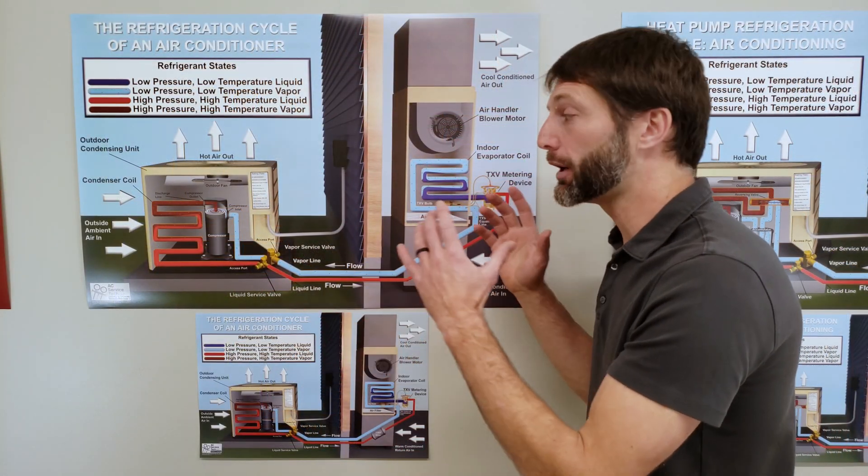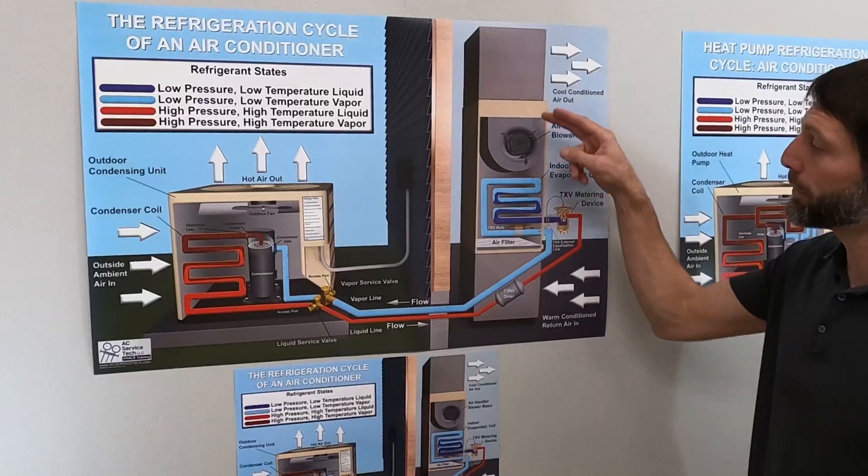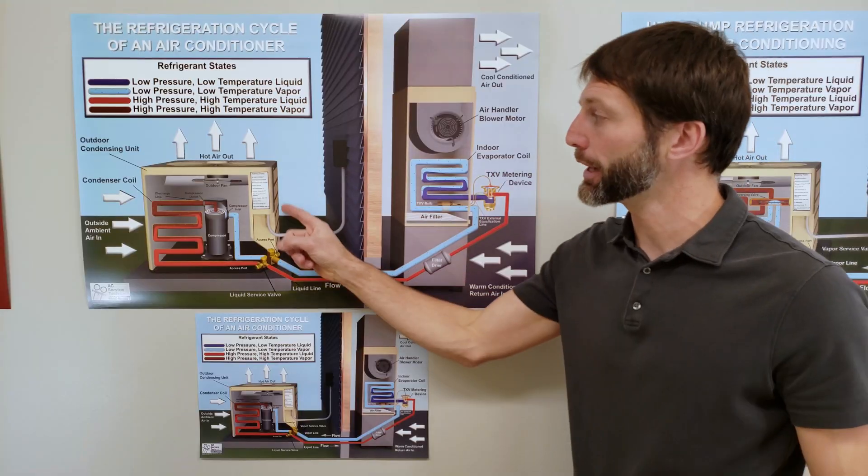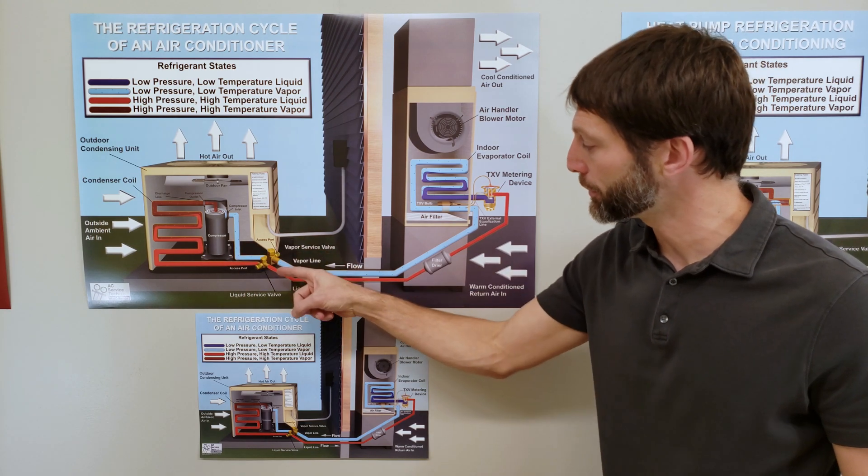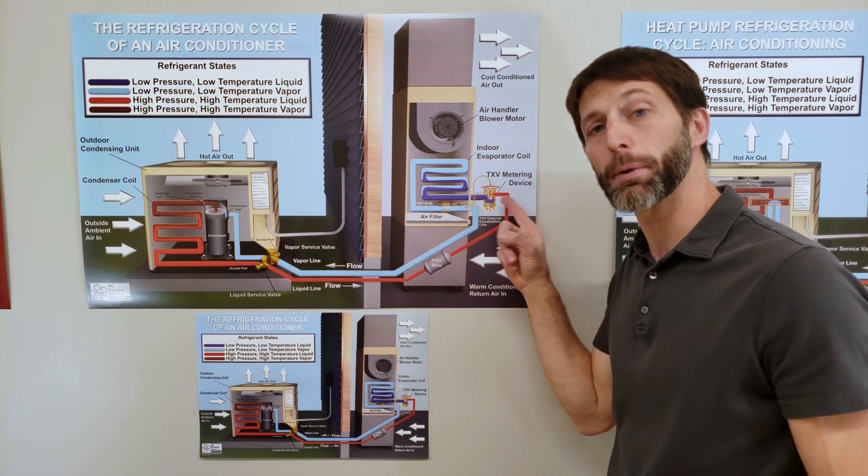Here's the refrigeration cycle of a split system air conditioner. Here you have your indoor air handler, your outdoor condensing unit, a scroll compressor, service valves, filter dryer, and thermostatic expansion valve.